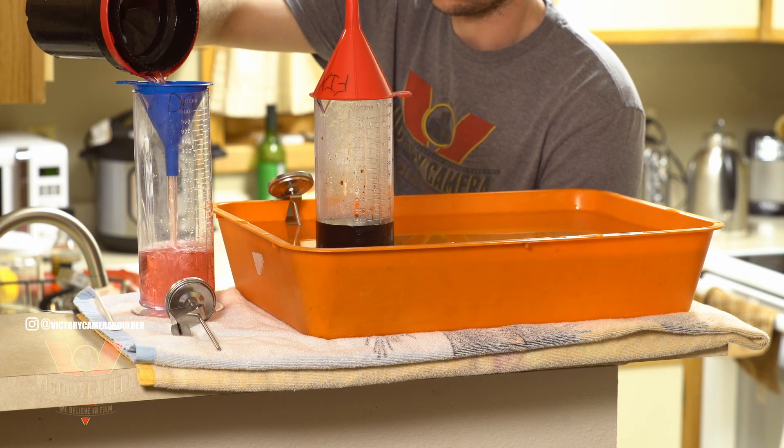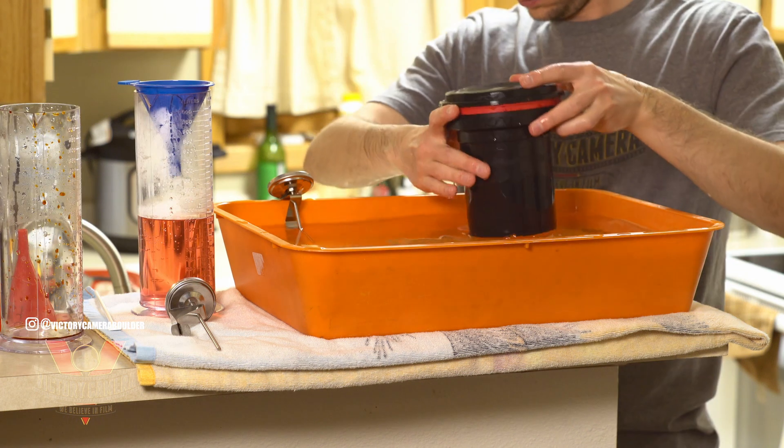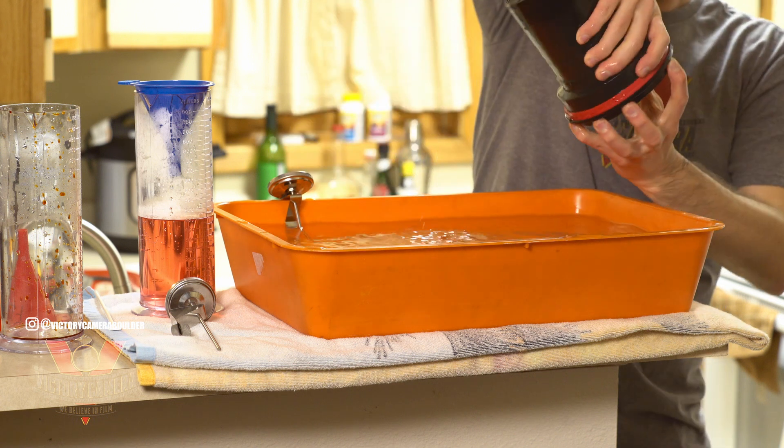Now pour the developer into its original container and pour in your Blix, agitating in the same pattern for eight minutes total, regardless of temperature.